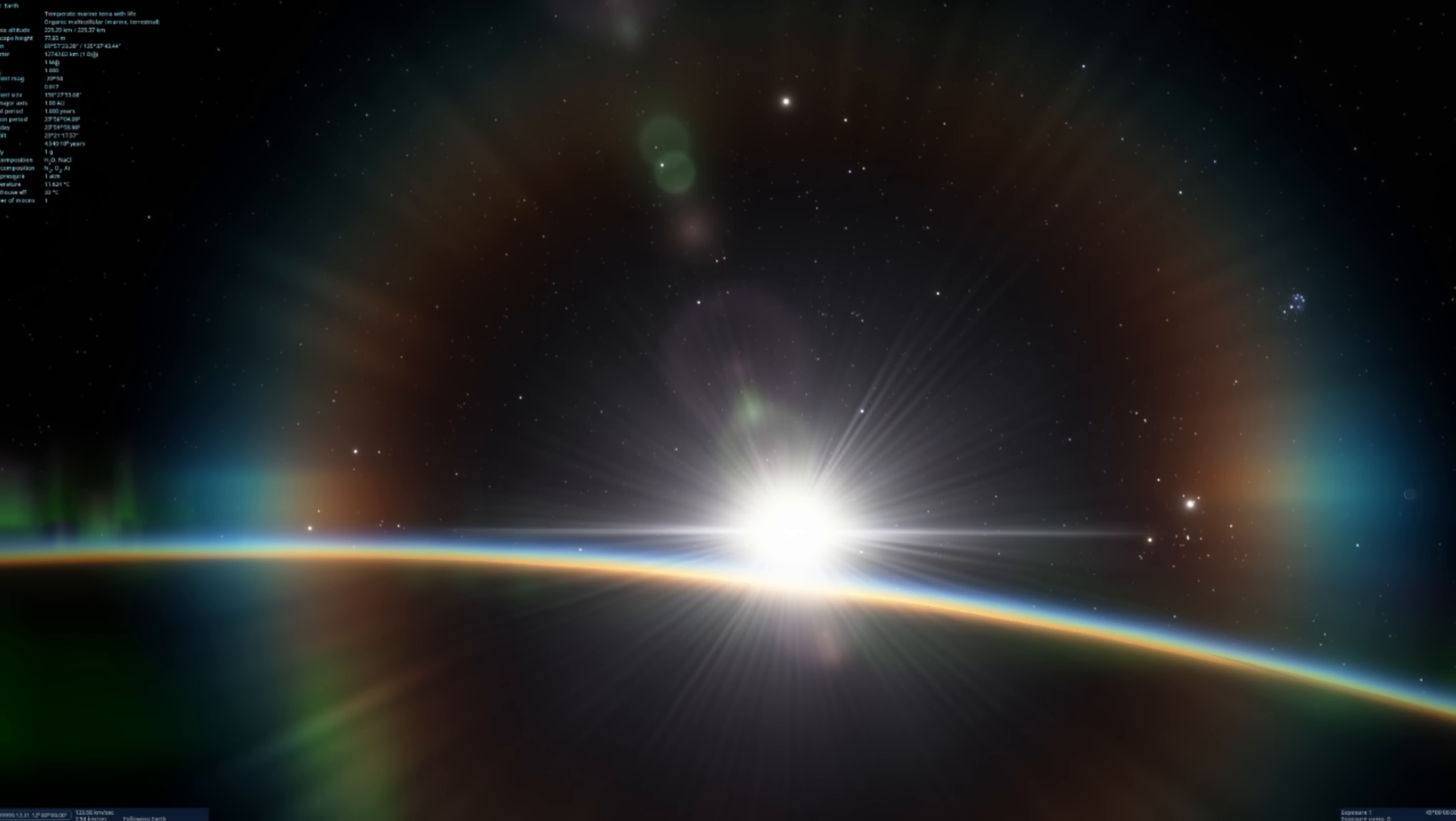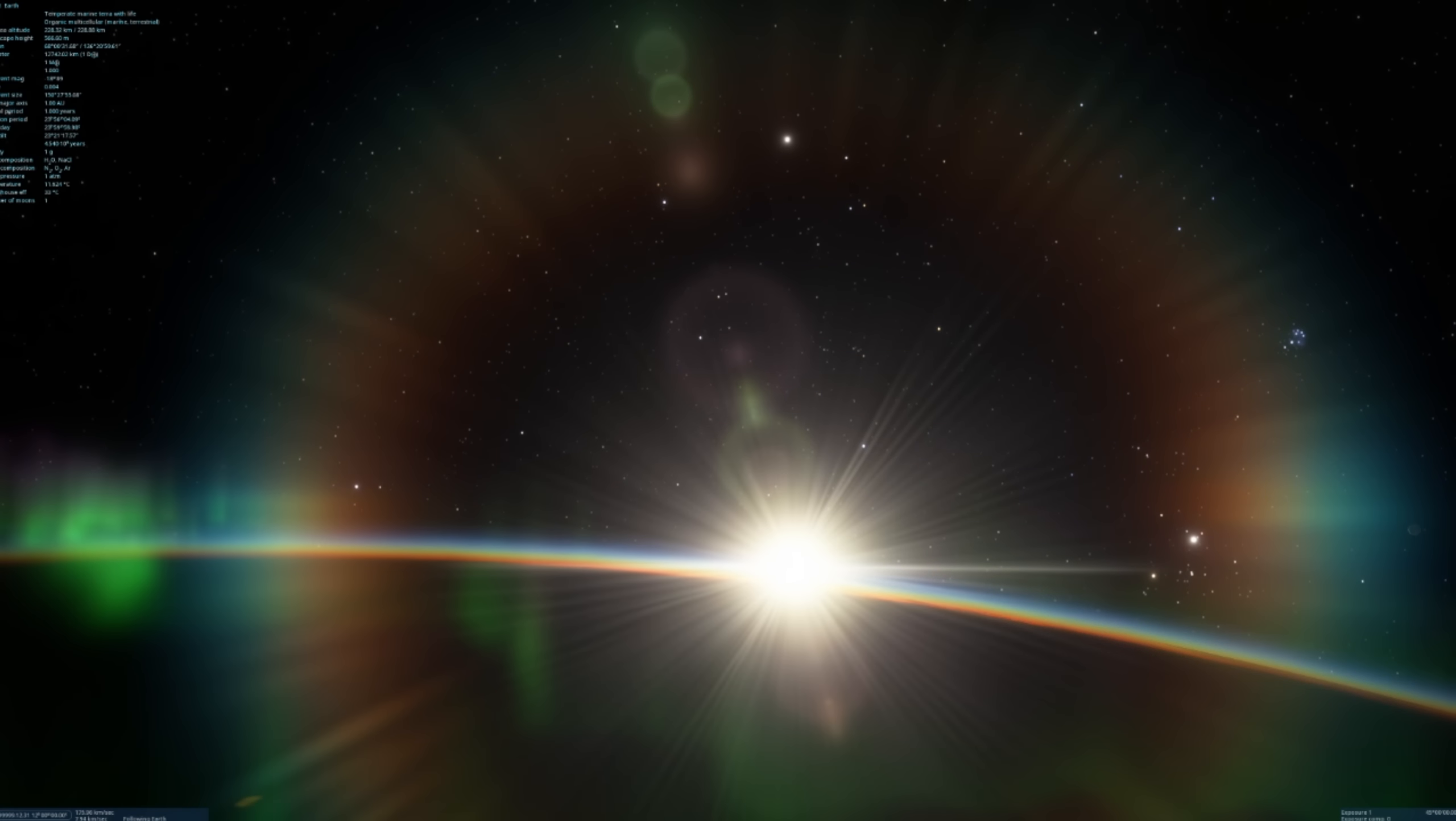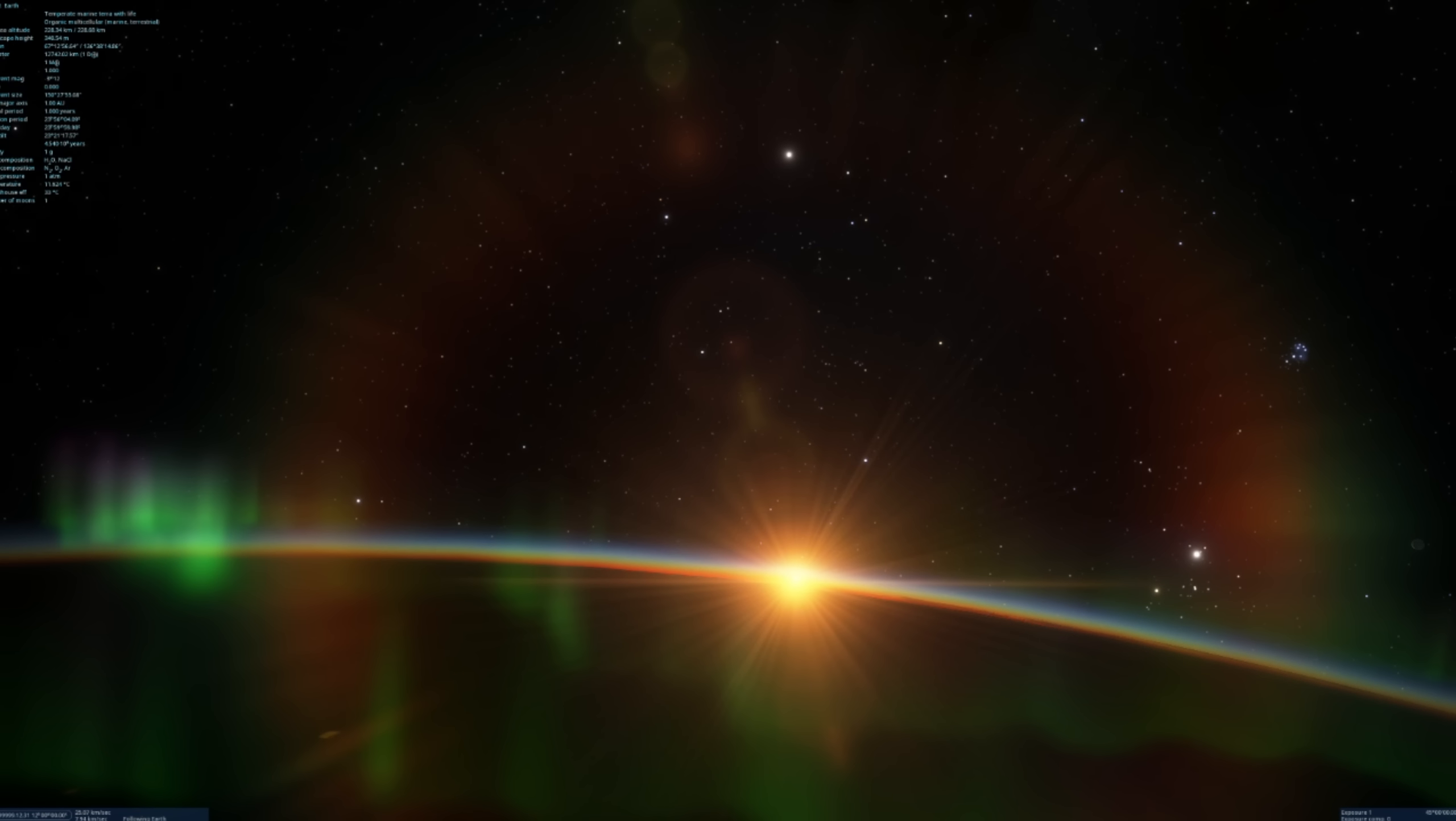That also means the more atmosphere the Sun has to go through to get to your eyes, the more yellowish-red-orange the sunlight will look. And so when you see the Sun going through a lot of atmosphere, it looks more red and yellow.